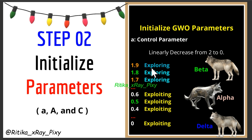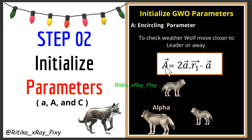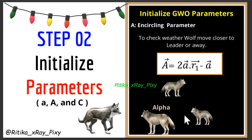The second parameter is the encircling parameter B. This parameter checks wolf positions relative to the optimal point. We use the encircling parameter to check whether search agents are moving closer to or away from the leaders — alpha, beta, and delta. We calculate B using its equation: if the value of |A| < 1, the wolf is moving closer to the leader (exploitation); if |A| > 1, the wolf is exploring away from the leader (exploration).